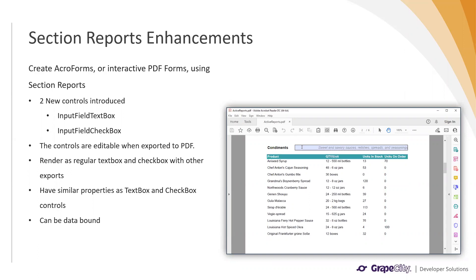You can data-bind these controls to give them an initial value, and when the user exports or downloads the report as a PDF, they can fill in or alter those values in the PDF itself. Properties you set at design time — like the color, font, and decoration of the text — will be maintained in the PDF. We'll see this in the demo later on.